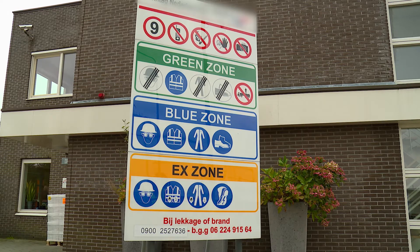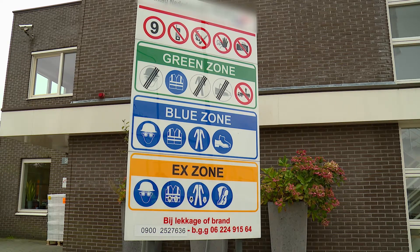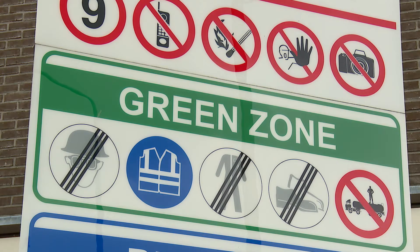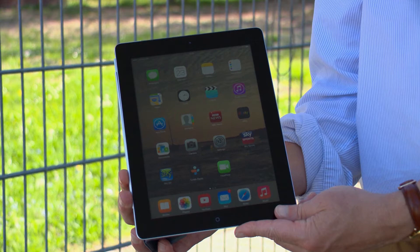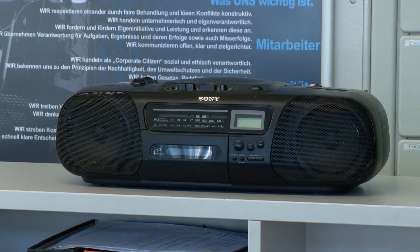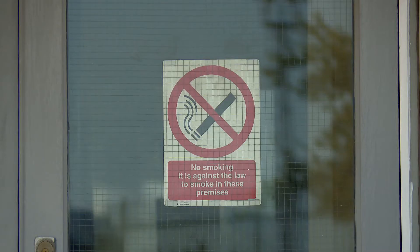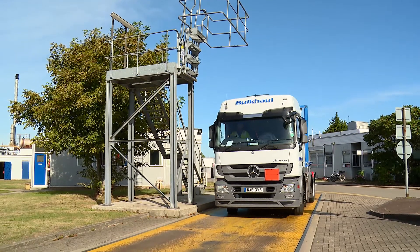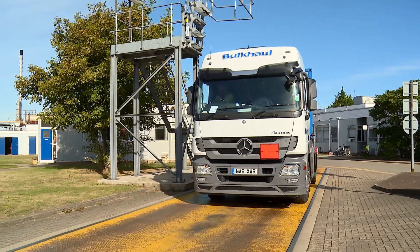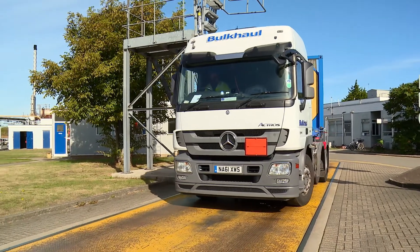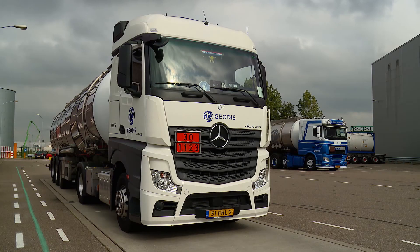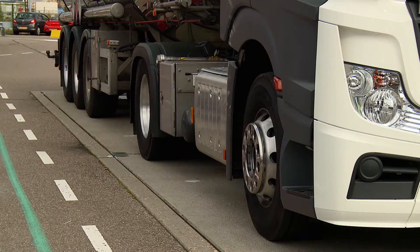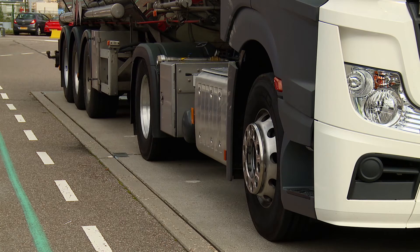Sources of ignition include lighters, electronic cigarettes, matches, Bluetooth accessories, tablets, radios and wearable technology. Smoking, including electronic cigarettes, will not be permitted. The vehicle may also be instructed to attend a weighbridge, where the current weight is ascertained before proceeding. Weighing may take place at the end user site or at a local certified facility.